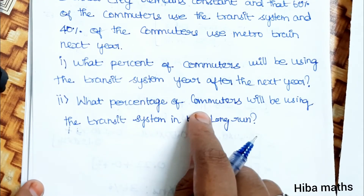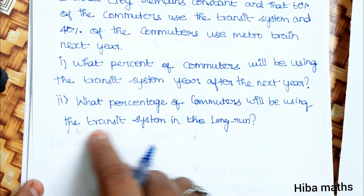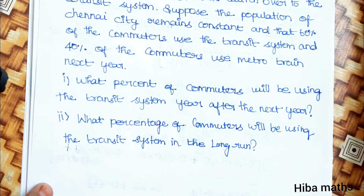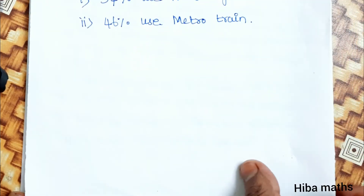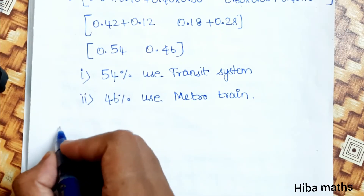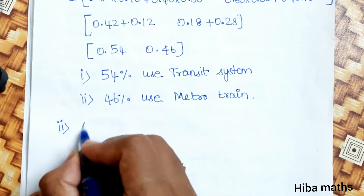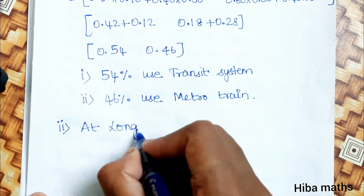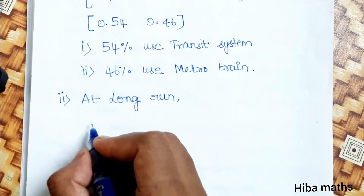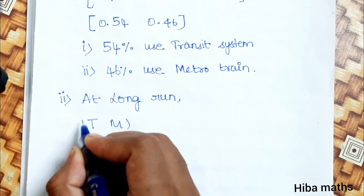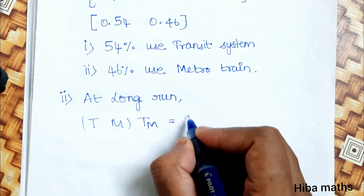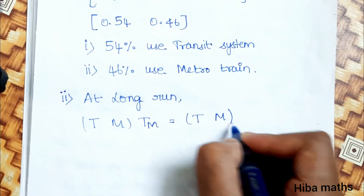What percentage of commuters will be using the transit system in the long run? At long run equilibrium, the condition is: TM multiplied by the transition matrix equals TM.